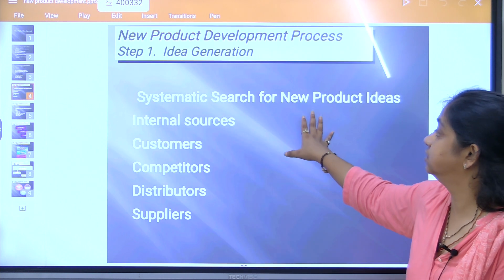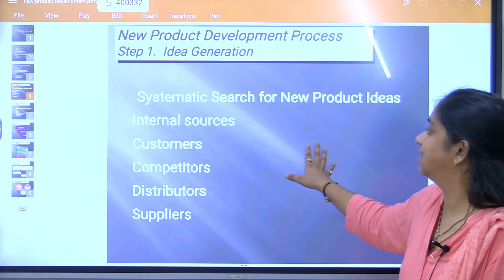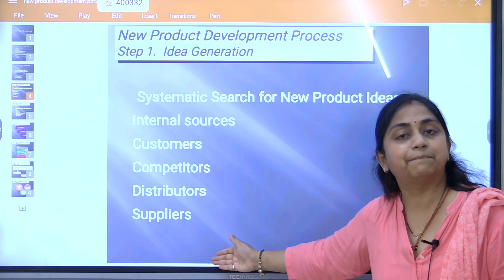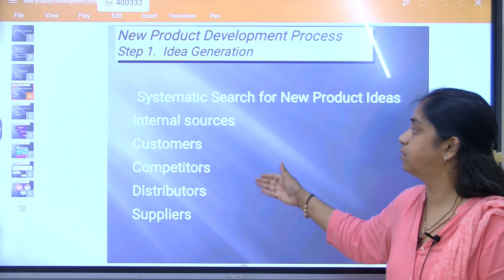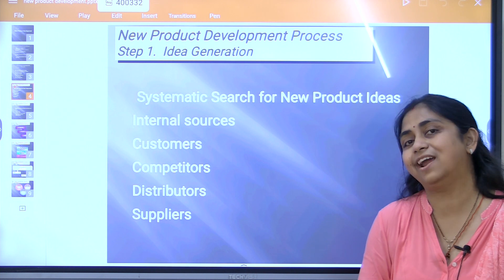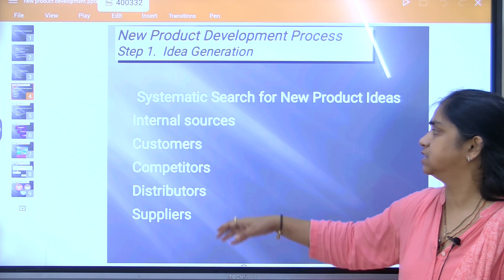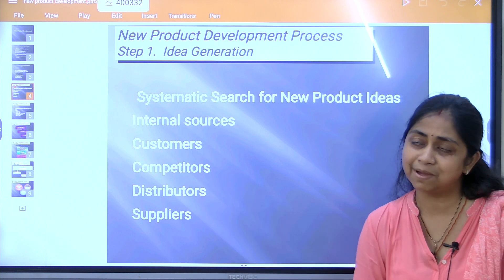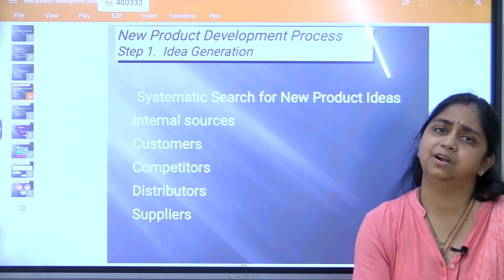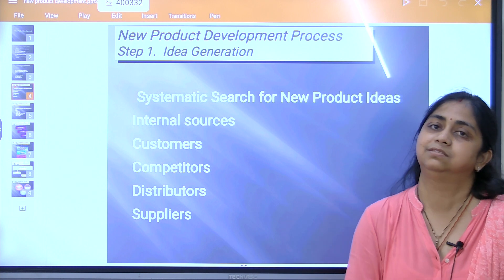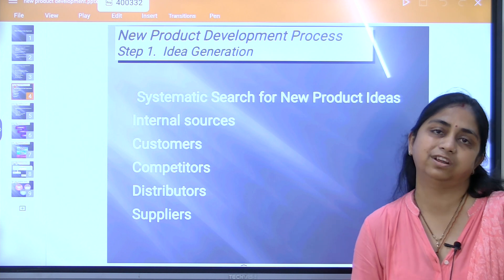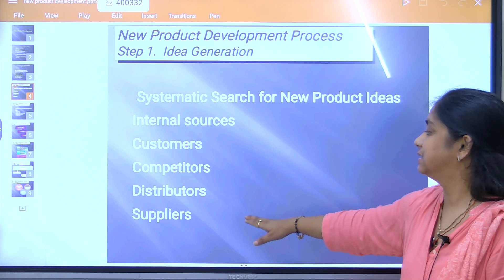Idea generation involves a systematic search for new product ideas. Sources include internal sources, customers, competitors, distributors, and suppliers. Customer feedback provides ideas, competitors launching new products give you direction, distributors show their interests in what your organization can develop, and internal employees can also suggest ideas.